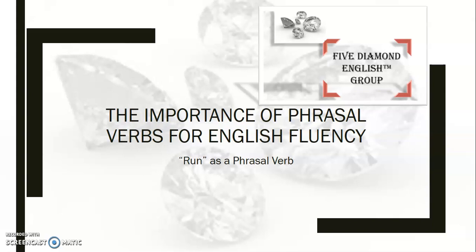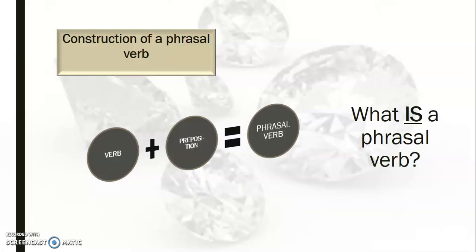We're going to take a look at 'run' as the phrasal verb today. The importance of phrasal verbs is that they are often used as what are called in Spanish 'modismos,' or idioms in English. Now, the construction of a phrasal verb goes something like this: we have a verb plus a preposition. The preposition might be on, off, over, under, in, out — and that equals a phrasal verb.